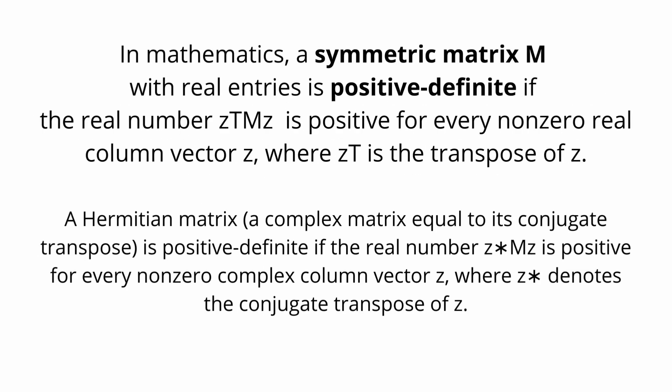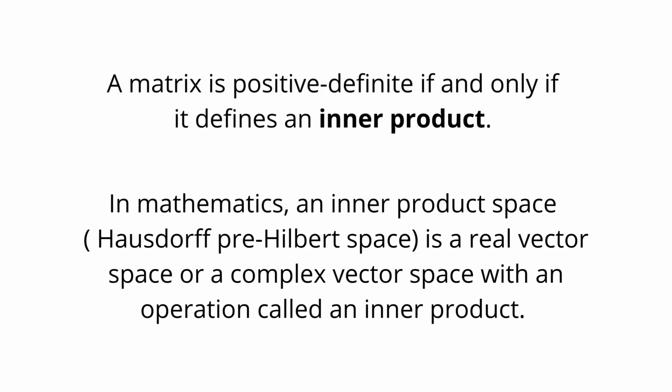What is this? A symmetric matrix M with real entries is positive definite if the real number Z-transpose MZ is positive for each and every non-zero real column vector Z, where Z^T is the transpose of Z. More generally, a Hermitian matrix — a complex matrix equal to its conjugate transpose — is positive definite if Z* MZ is positive for every non-zero complex column vector Z, where Z* denotes the conjugate transpose of Z. A matrix is positive definite if and only if it defines an inner product.